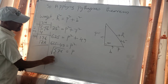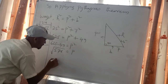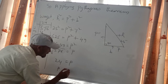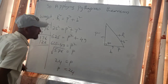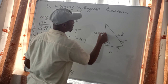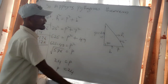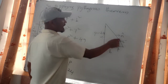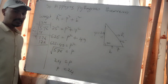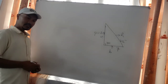So we calculate: 625 equals P squared plus 49, therefore P squared equals 625 minus 49 equals 576. So P equals 24. The perpendicular is 24. So in our right angle triangle: base is 7, hypotenuse is 25, perpendicular is 24.